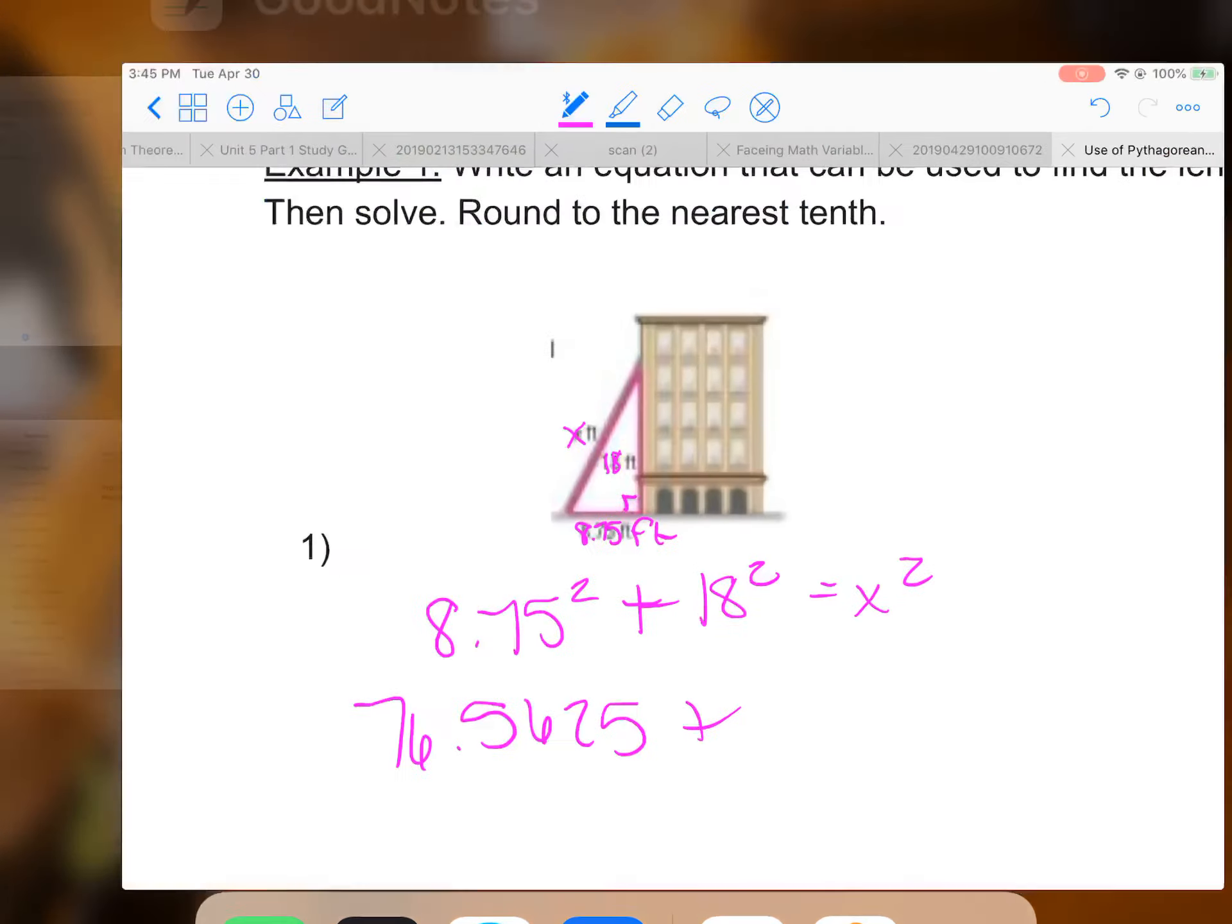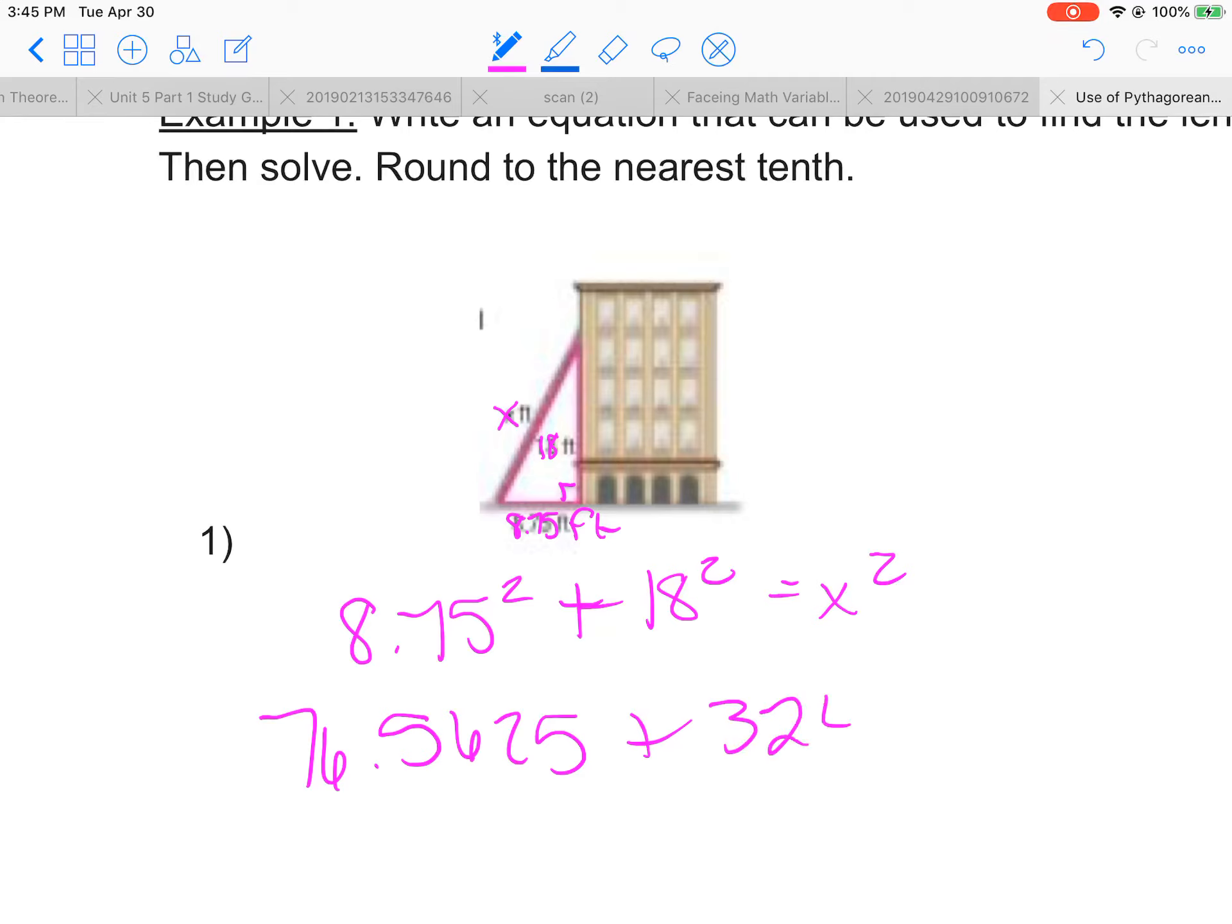18 squared, 324 equals x squared. And you can see that, just so we can clarify again, the ladder is what they were asking about, and the ladder is what's up against the building.